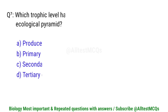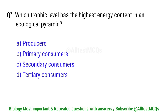Question number 7. Which trophic level has the highest energy contained in an ecological pyramid? Correct option is A. Producers.